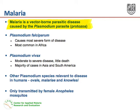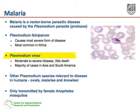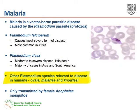Malaria is a vector-borne parasitic disease caused by the Plasmodium parasite. Plasmodium falciparum causes the most severe form of the disease and is most common in Africa. Plasmodium vivax causes moderate to severe disease although little death, with the majority of cases in Asia and South America. Other Plasmodium species relevant to disease in humans include Plasmodium ovale, Malariae, and Knowlesi.